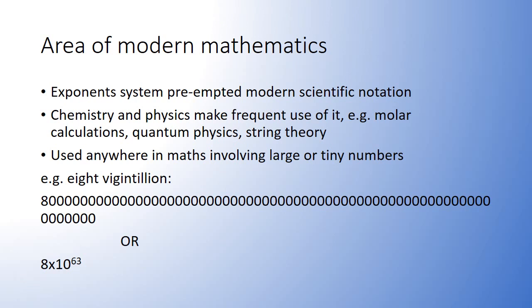Archimedes' exponent system preempted modern scientific notation, which is frequently used in chemistry and physics, such as in molar calculations, quantum physics, and string theory. Additionally, it is used anywhere in mathematics involving large or tiny numbers.